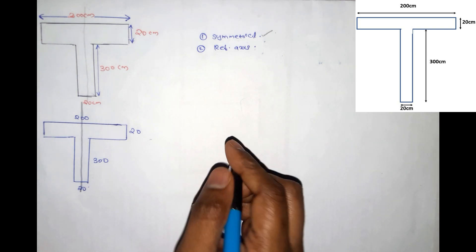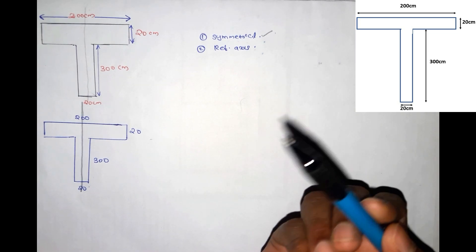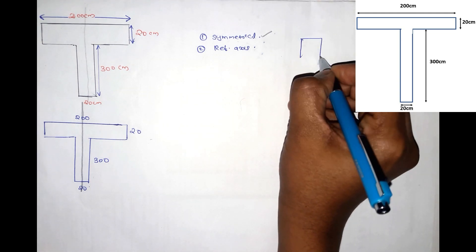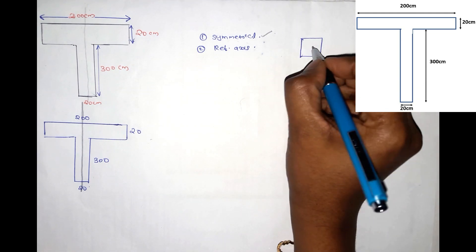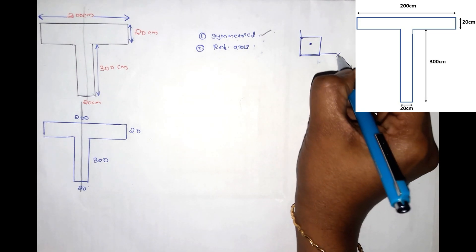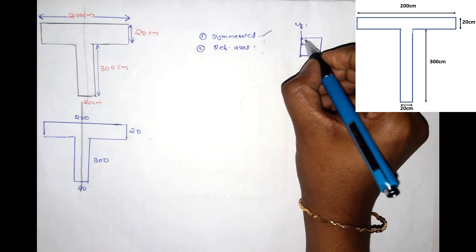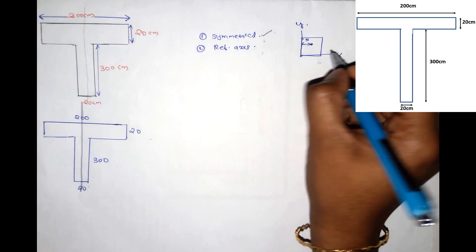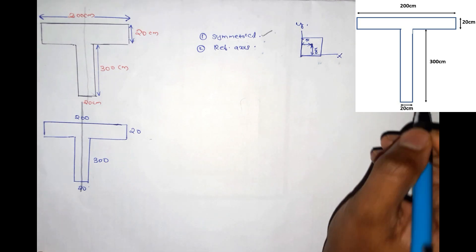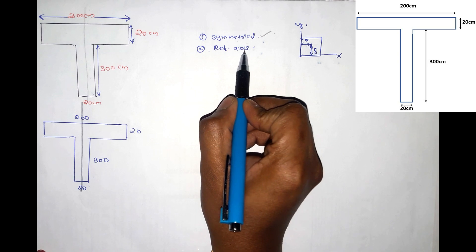How do I use the reference axis? We mark the distance in the reference axis. This is the given section. This is the central y-axis and x-axis. It is the central distance — x-bar. The x-axis is the central distance. The second step is to mark the reference axis.